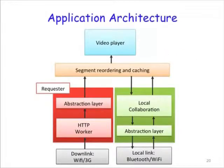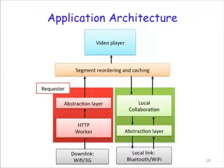The architecture of our software consists of four components. The first component, shown in red, is responsible for having every phone communicate with the server and download parts of the video through Wi-Fi or 3G. The green component is responsible for having a phone communicate with its neighbors and exchange different parts of information — this is where network coding is implemented, using Bluetooth or Wi-Fi. The third and fourth components, shown in orange and blue, are responsible for reordering and caching video segments and playing them while still downloading.